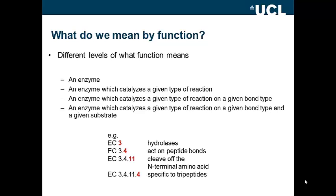For example, the fact that a protein is an enzyme is a function, but we can also define more detailed levels of function by looking at the type of reaction catalyzed, the bonds that are affected, and the specific substrate. The enzyme classification, EC numbers, do exactly that, providing a hierarchical classification of enzyme function.